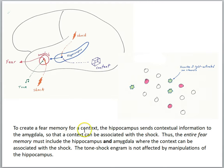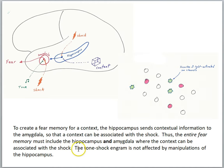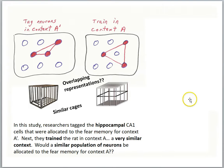These two important brain areas are making different kinds of contributions to a memory for an event — a tone paired with a shock in a certain context. The amygdala is instrumental in making the association between the tone and the shock. The hippocampus is instrumental in making the association of the bad news happening in a certain context. To create a fear memory for a context, the hippocampus sends contextual information to the amygdala so that a context can be associated with the shock. Thus the entire fear memory must include the hippocampus and the amygdala. The tone-shock engram is not affected by manipulations of the hippocampus.